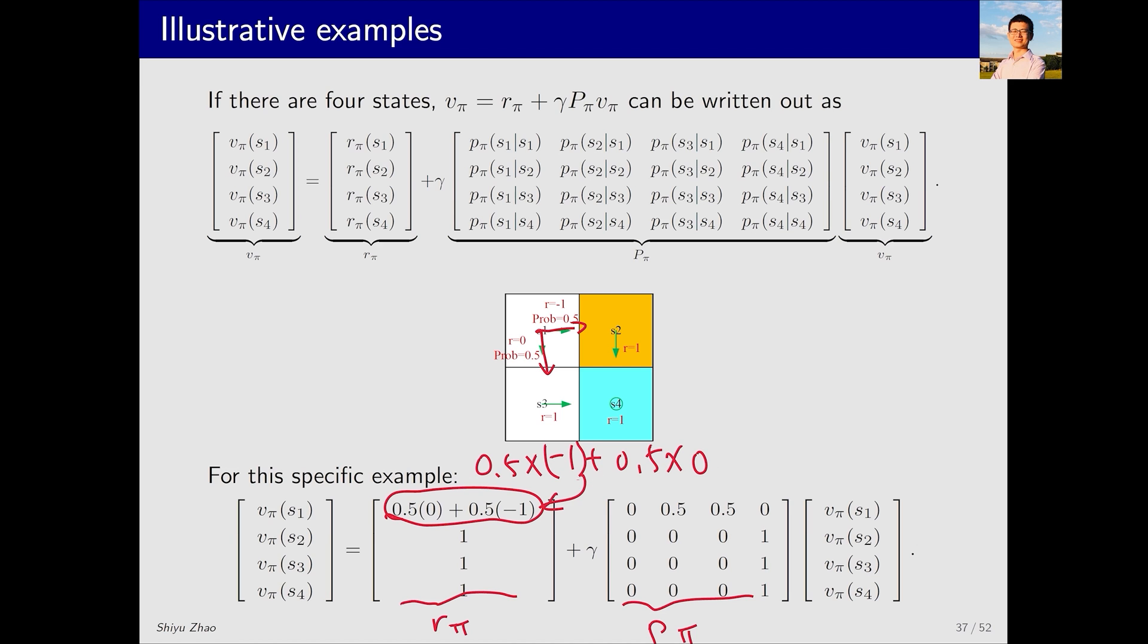Looking at P_π. Again, using the first row as an example. The first element represents the probability of transitioning from s1 to s1, which is 0. The second element is the probability of transitioning from s1 to s2, which, unlike before, now has a possibility of 0.5. The third element for transitioning from s1 to s3 is also 0.5. Transitioning from s1 to s4 is 0. Other rows can be written in a similar manner.